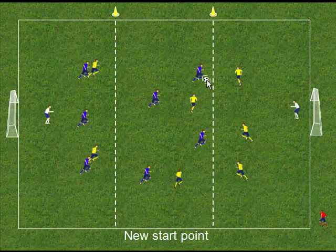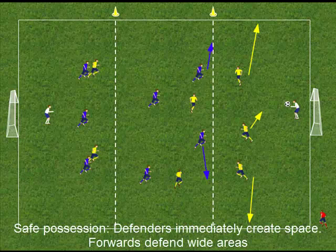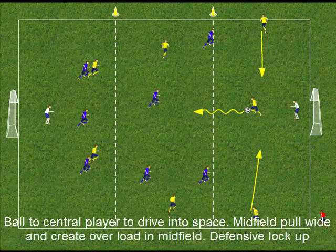In this example, the two forwards have stopped the white defenders getting out, so the ball is rolled to the centre half who can drive forward into the space with the other two defenders covering around.